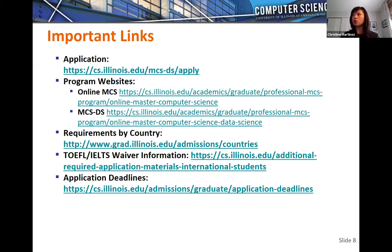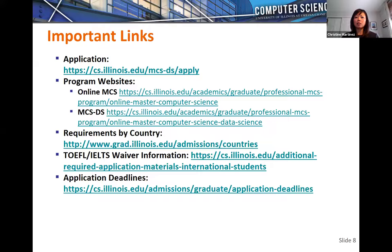That concludes the FAQ. Here are some important links: the application link available on our website and from the Coursera website; two program website links for online MCS general courses and the MCS DS track; requirements by country including GPA requirements and whether TOEFL or IELTS is required; TOEFL and IELTS waiver information for those who may qualify based on employment history or school attendance; and application deadlines including when applications must be submitted and when decisions go out. That concludes the slide deck.